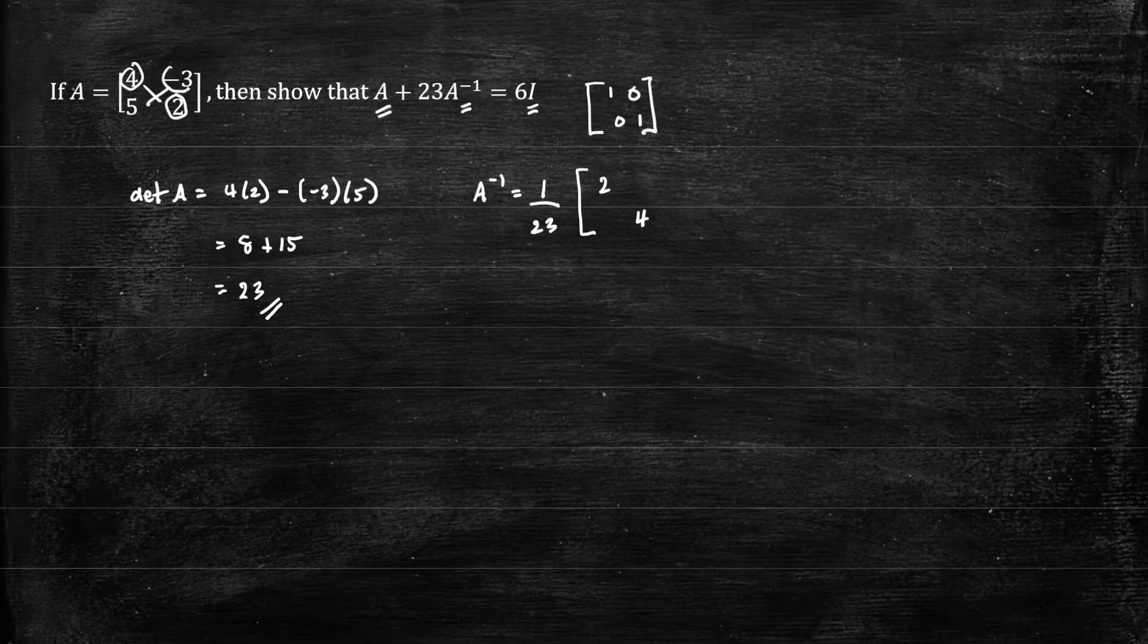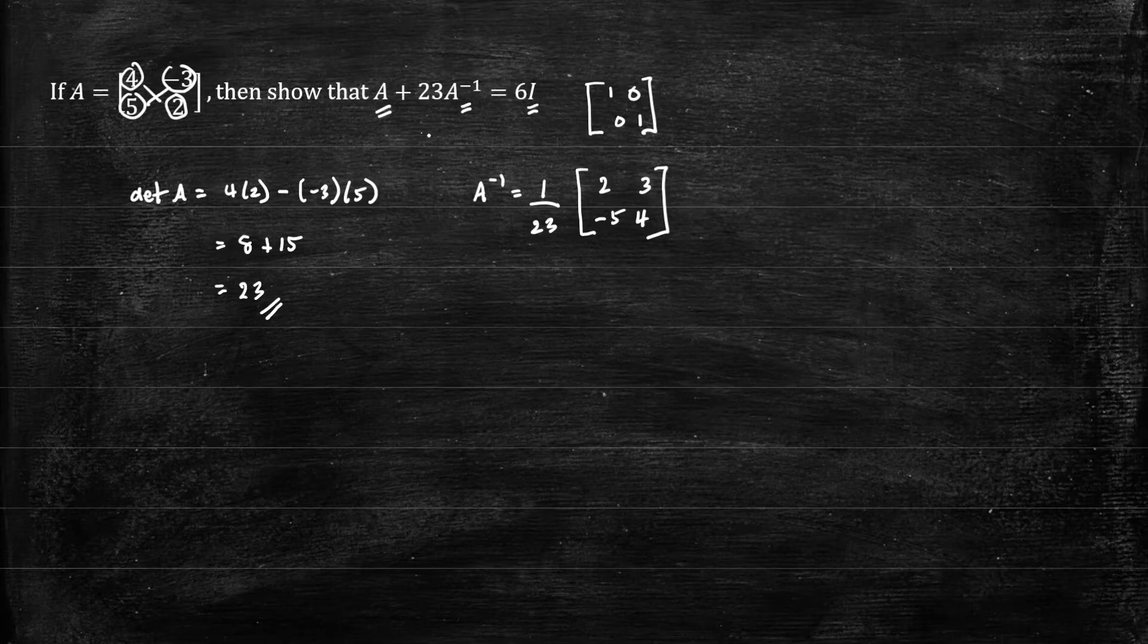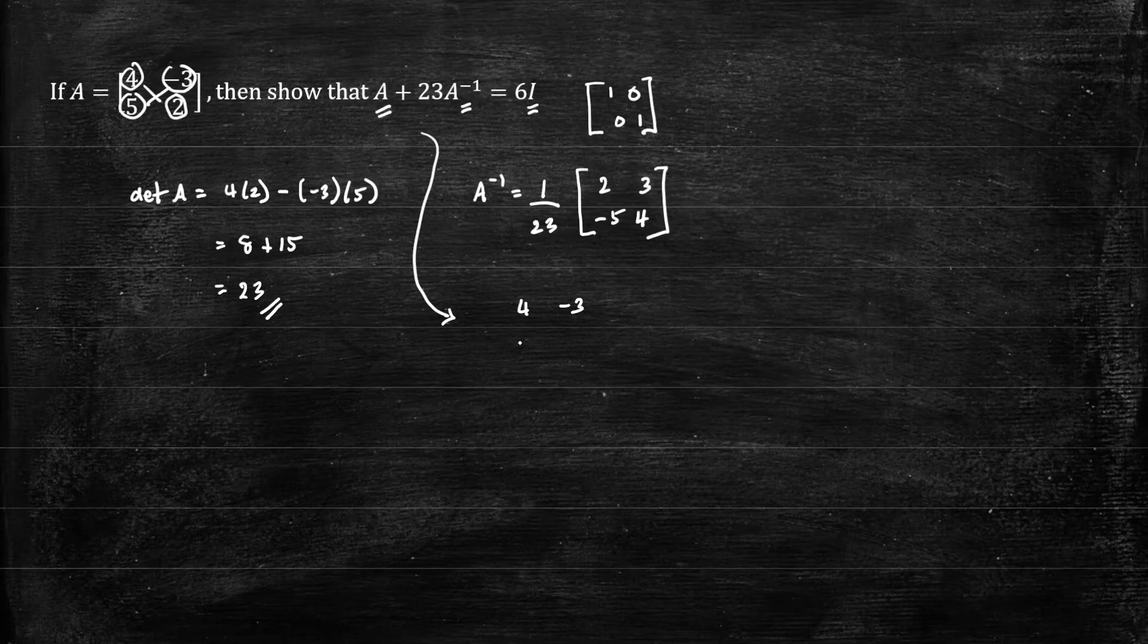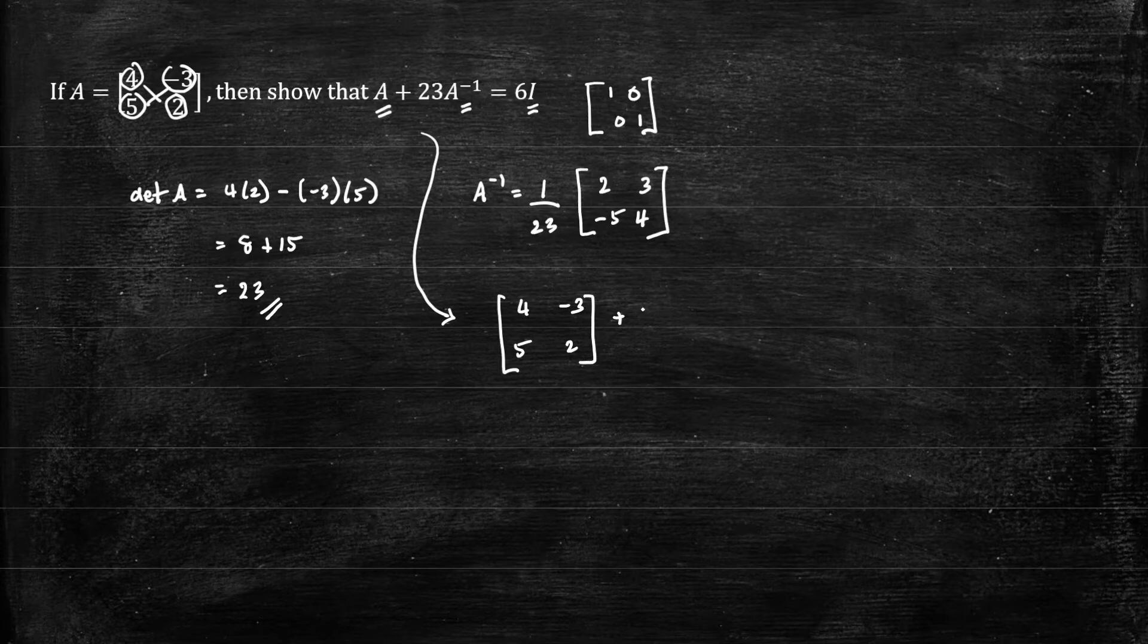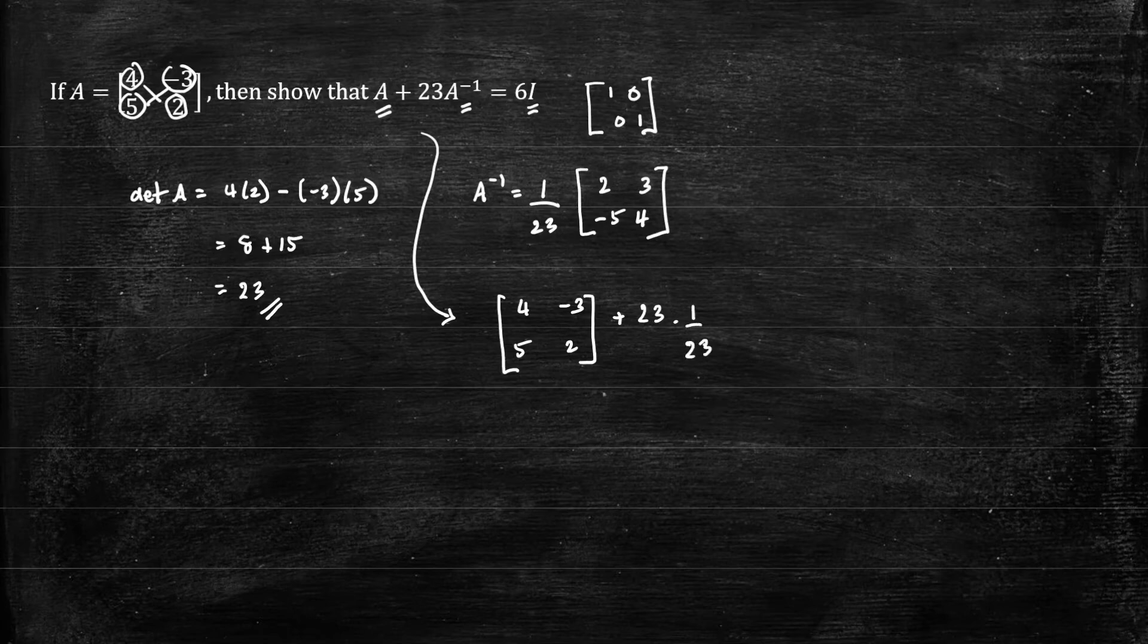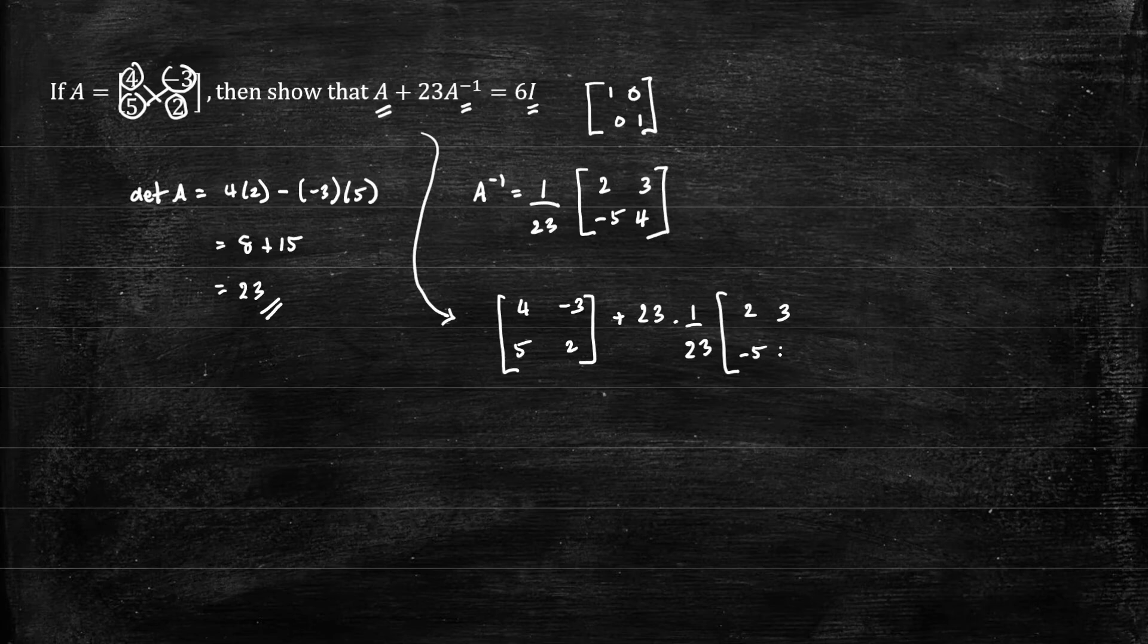And for the other elements, negative 3 and 5, we change the sign. So that becomes 3. That becomes negative 5. Now that we have all the parts, let's write down the equation. We have A, which is 4, negative 3, 5, 2. Plus 23 times the inverse of A, which is 1 over 23. 2, 3, negative 5, 4.